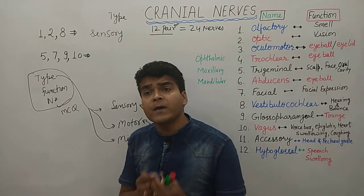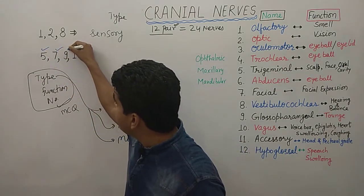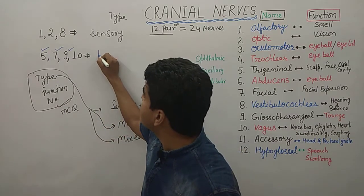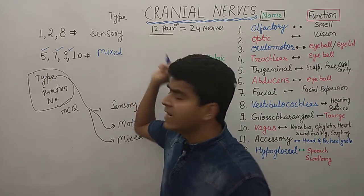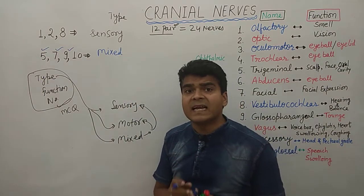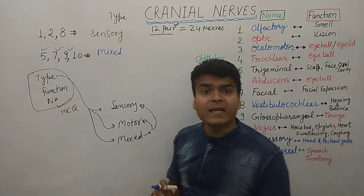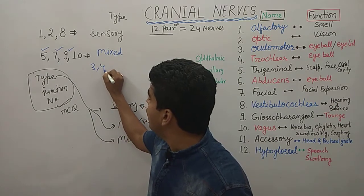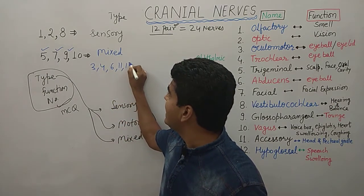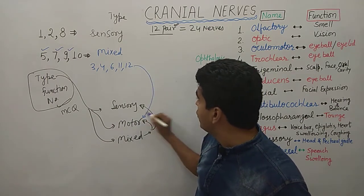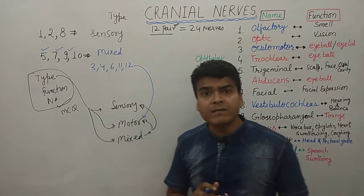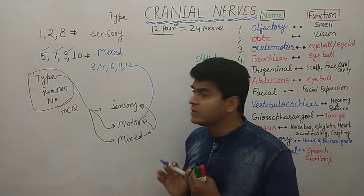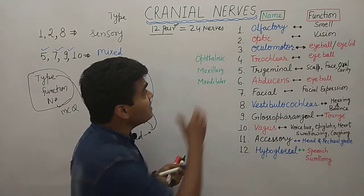You need to remember that nerves at odd numbers 5, 7, 9, and then number 10 are in the mixed category — they are mixed. The remaining nerves — numbers 3, 4, 6, 11, and 12 — are motor. Nerves 1, 2, and 8 are sensory.